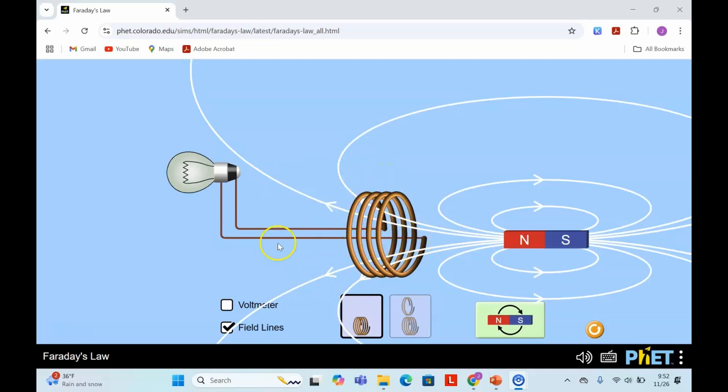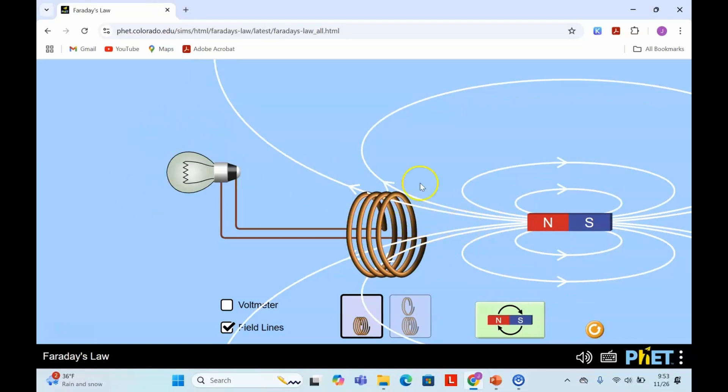Here's a coil of wire with leads attached to a light bulb that complete a circuit. I'm going to change the flux to the circuit and light up the light bulb.